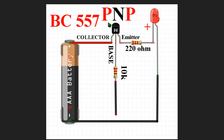This is the circuit diagram of the PNP transistor, and the model number of the PNP transistor is BC557. The connection is almost the same as the NPN transistor, but this time we have to connect the base with ground. If we connect the base with ground, the LED will turn on.